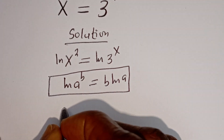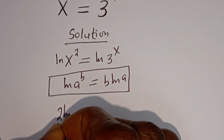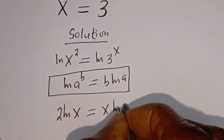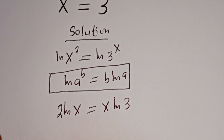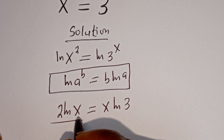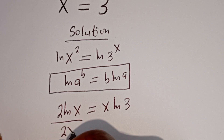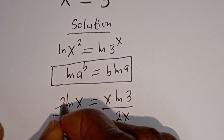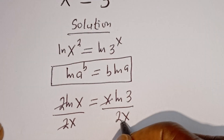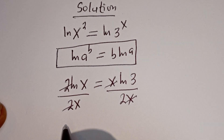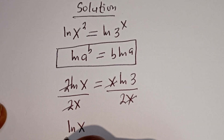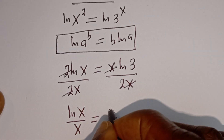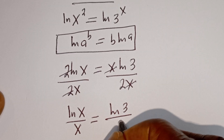Then this can be written as 2 ln of x is equal to x ln of 3. Now here we have 2 and we have x. Let's divide both sides of this equation by 2x. We cancel the 2 and the x. We have ln of x divided by x is equal to ln of 3 divided by 2.